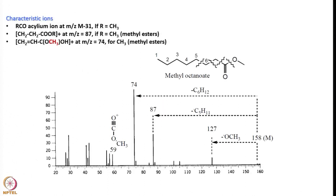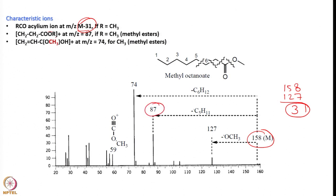Now let us look at methyl octanoate. The RCO (M-31) peak is at 58 — the molecular weight is 158, and 158 minus 31 gives 127. Acylium ion formation is present. Loss of C5H11 gives 87, and C6H12 loss gives 74 for the methoxy group. At 59 we also see a characteristic peak. Work out what the remaining peaks correspond to and identify the losses involved.